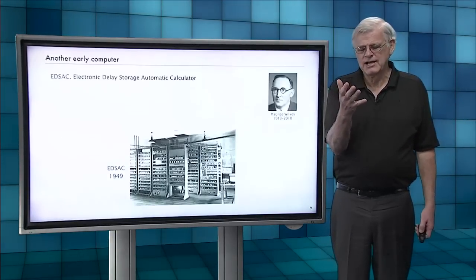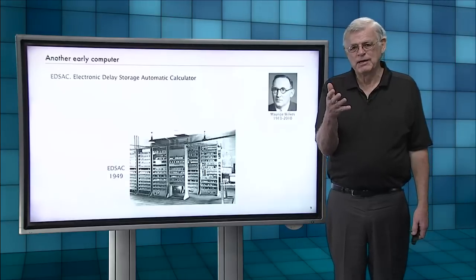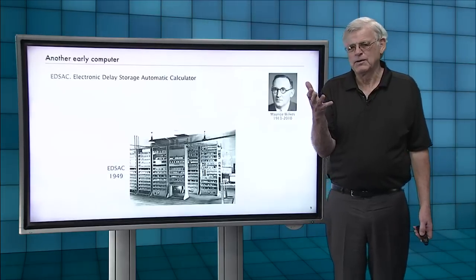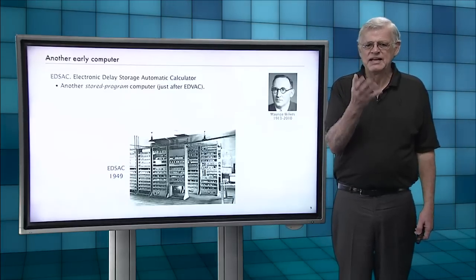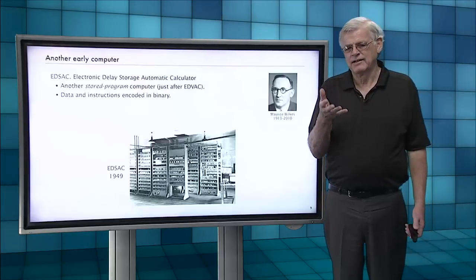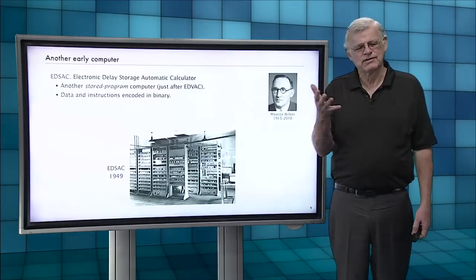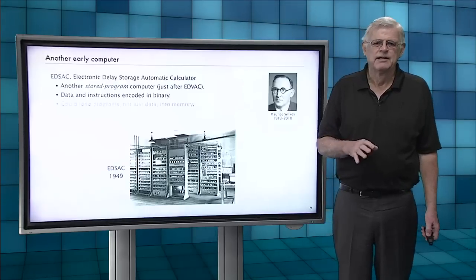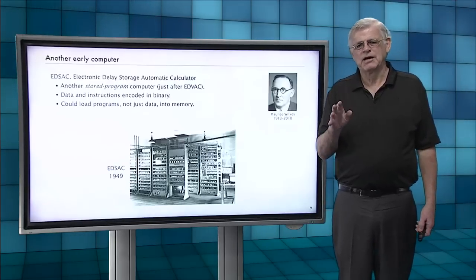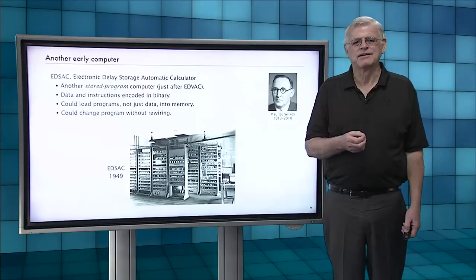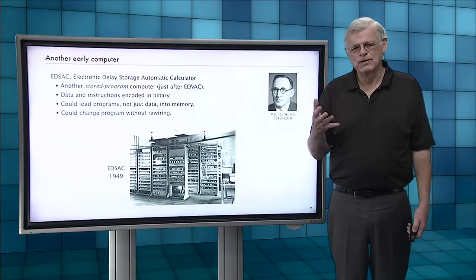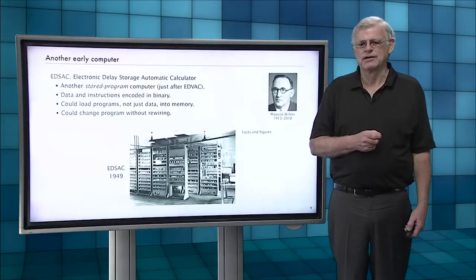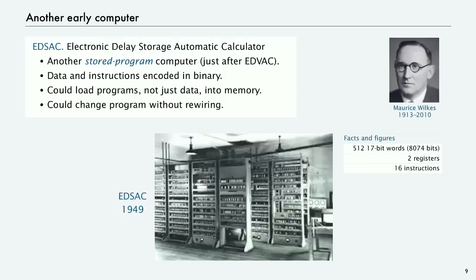Another example, just as an indication of the impact of von Neumann's memo, just not very long after the memo was published, Maurice Wilkes in England built another machine called the EDSAC. And that one had lots of characteristics very similar to the machines we use today. The data instructions were loaded in binary. You could load programs, not just data, into the memory. And you could change the program without rewiring. And those are all characteristics that we depend on, and we'll come back to this later in this lecture.